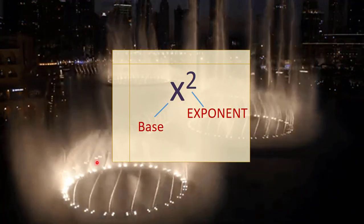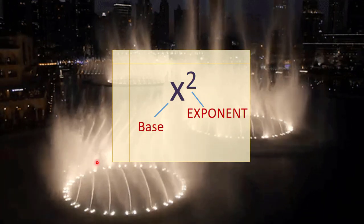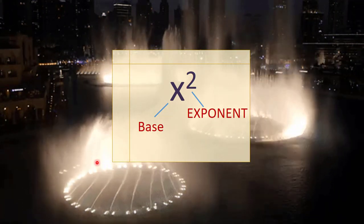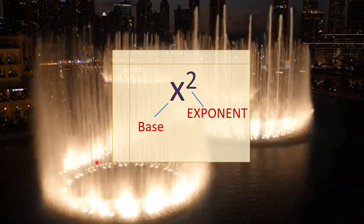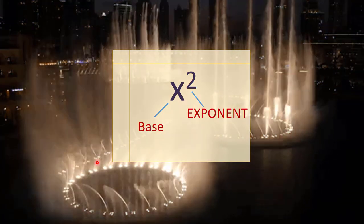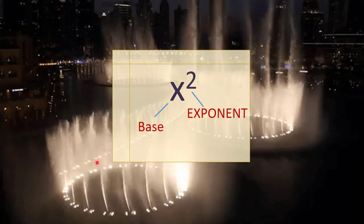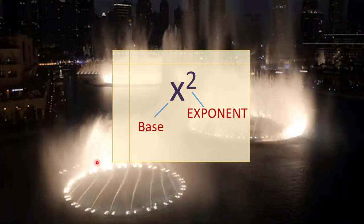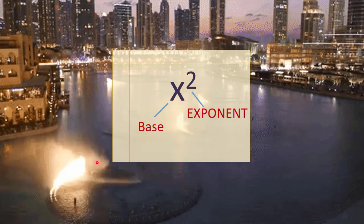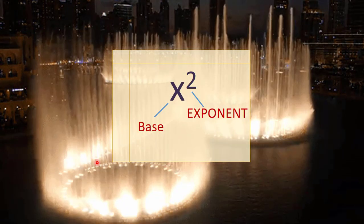The variable x is called the base, and the power 2 is called the exponent. We read it as 'x raised to the power 2.' The exponent is also called the index or power.